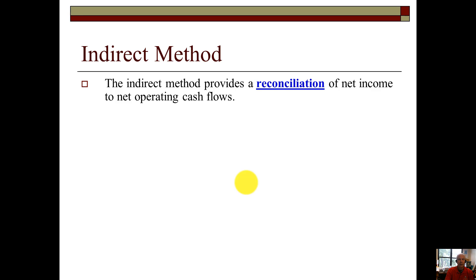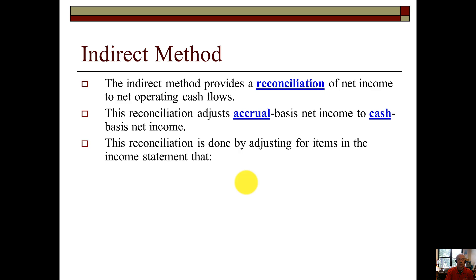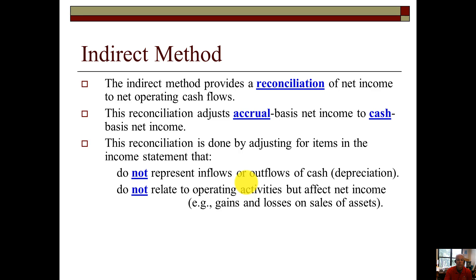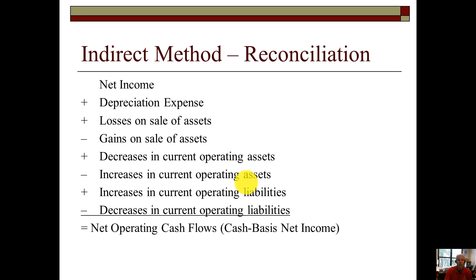The indirect method provides a reconciliation of net income to net operating cash flows. This reconciliation adjusts accrual basis net income to cash basis net income by adjusting for items that: (1) do not represent inflows or outflows of cash — for example, depreciation expense — and (2) do not relate to operating activities but affect net income — for example, gains and losses on the sale of long-term assets. Here is the format of the reconciliation, with net income at the very top.